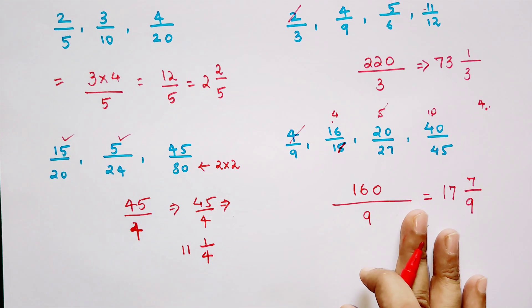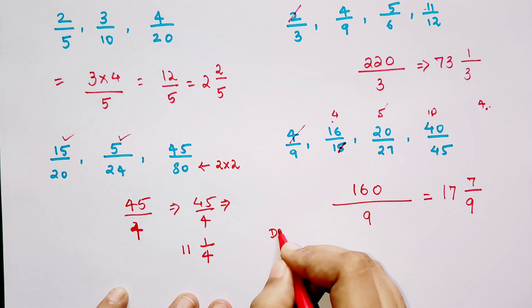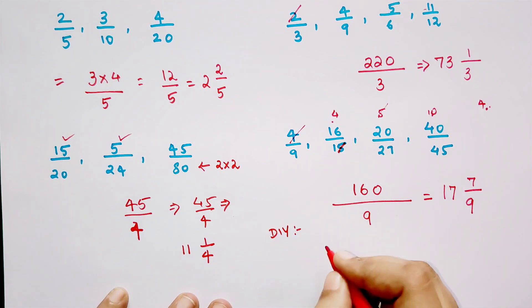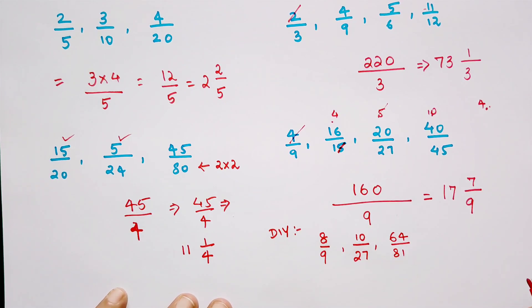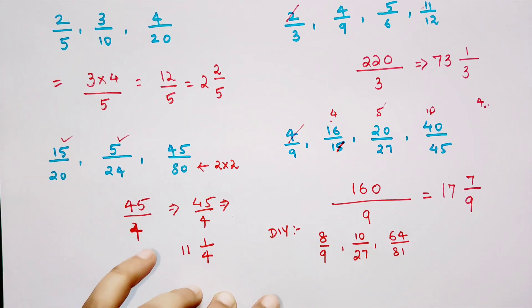Now coming to the part of your DIY. Do let me know what is the answer of, or what is the LCM of these fractions: 8 upon 9, 10 upon 27, and let's take 64 upon 81. Do let me know your answers in the comment section. So that's it for now, I will see you in the next video.